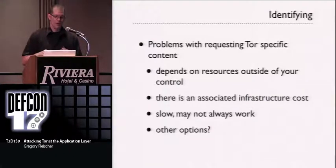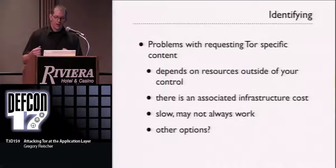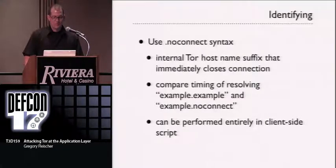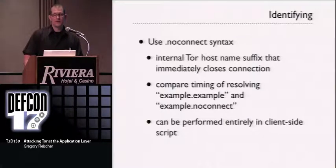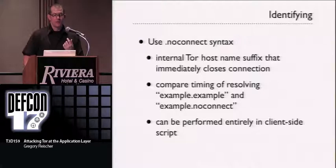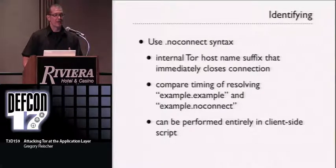There are significant problems with this approach: speed — requests are slow, especially for hidden services — and you're depending on resources outside your control. There's another internal special syntax: .noConnect. You can use this to test the speed at which you resolve DNS names ending in .noConnect. It's essentially a no-op: as soon as you request an address ending in .noConnect, Tor immediately closes the connection. DNS requests — even to a local resolver — take more time than it takes for Tor to close your socket. You can use these timing discrepancies to identify if someone is using Tor, entirely on the client side in JavaScript.